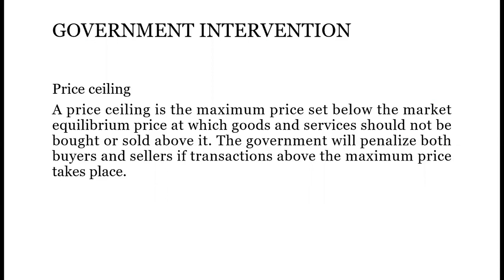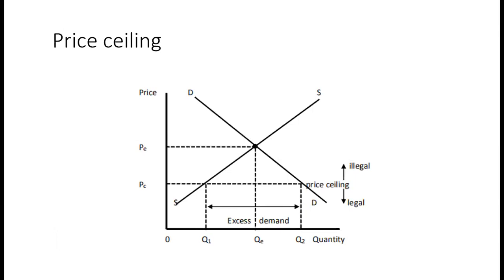The diagrammatic exposition of a price ceiling looks like this. We have a normal demand curve, which is downward sloping, and a normal supply curve, which is upward sloping. The supply and demand curves give us an equilibrium price and an equilibrium quantity, which are also known as market forces. Through government intervention, it can set a price ceiling at PC.